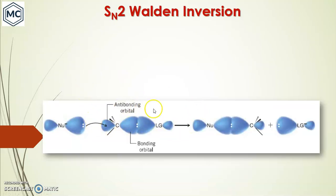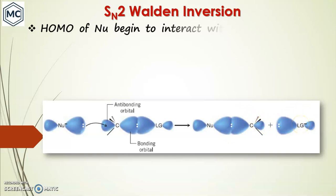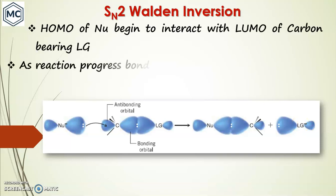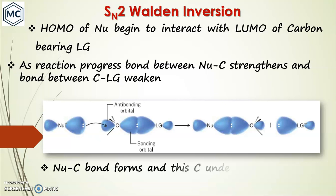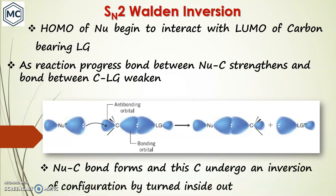This is the orbital diagram of this nucleophilic substitution. The HOMO of the nucleophile interacts with the LUMO (anti-bonding orbital) of the electrophile. The nucleophile approaches the anti-bonding orbital and begins to form a bond — the anti-bonding orbital becomes a bonding orbital — and then the leaving group departs. As the reaction progresses, the nucleophile–carbon bond strengthens and the carbon–leaving group bond weakens.